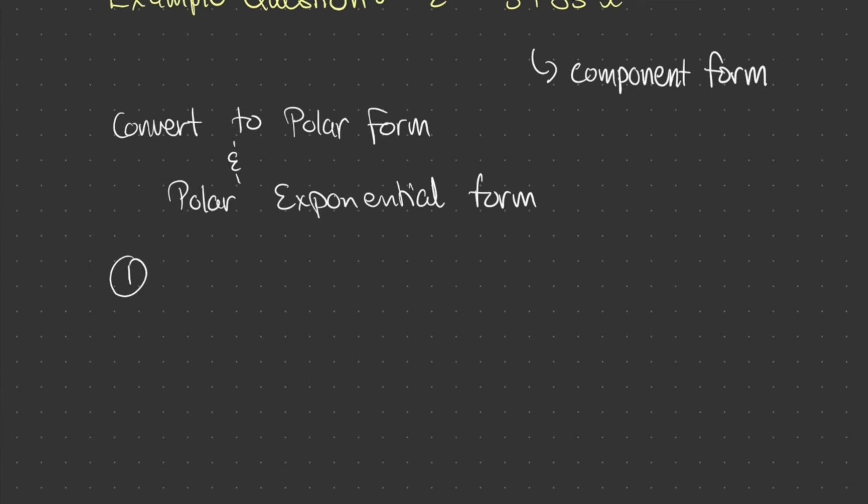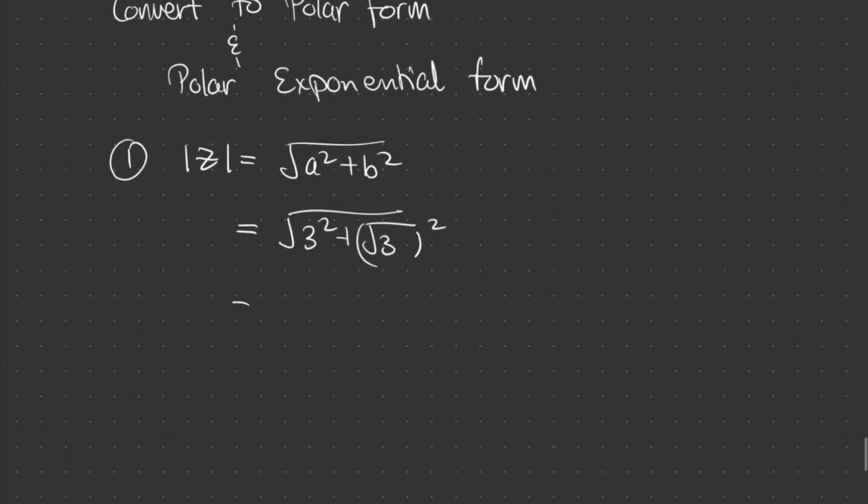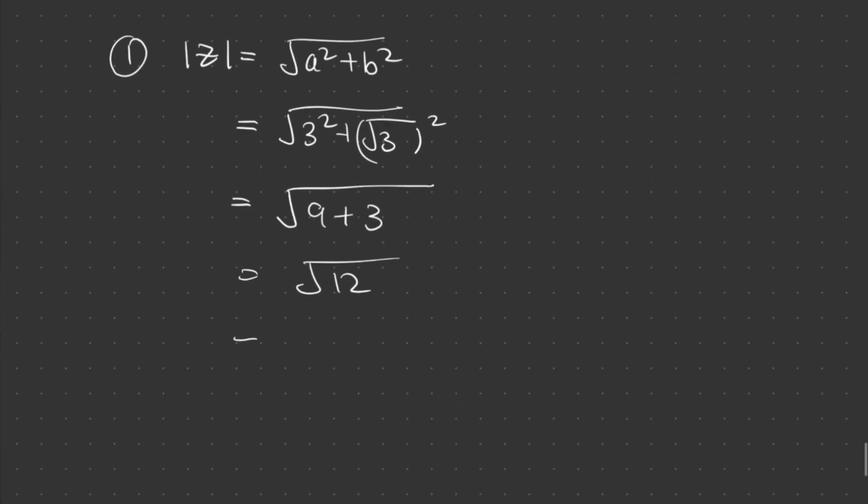Firstly, let's find the modulus of z. Remember, that is equal to the square root of a squared plus b squared, which in this case is 3 squared plus the square root of 3 squared, which becomes the square root of 9 plus 3, which is equal to the square root of 12. And that can be written as 2 square root of 3.